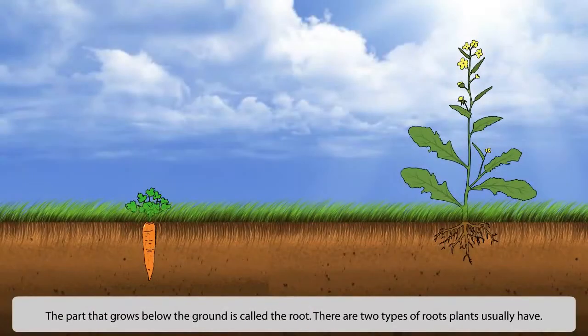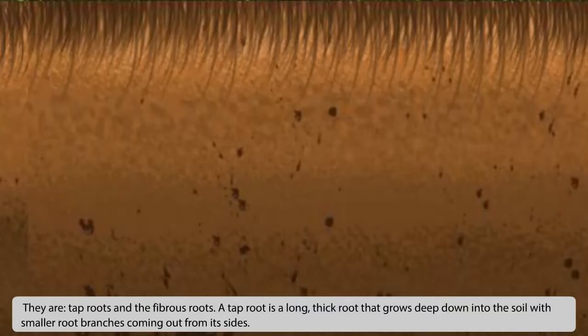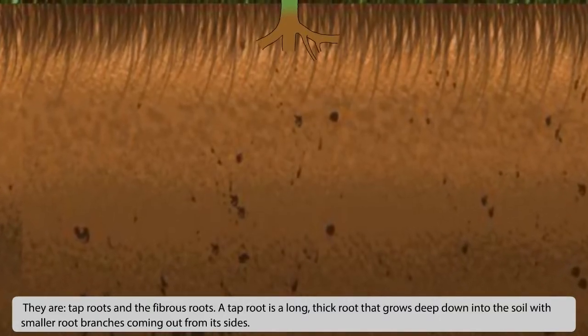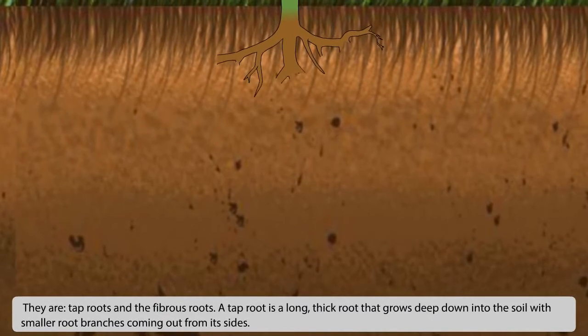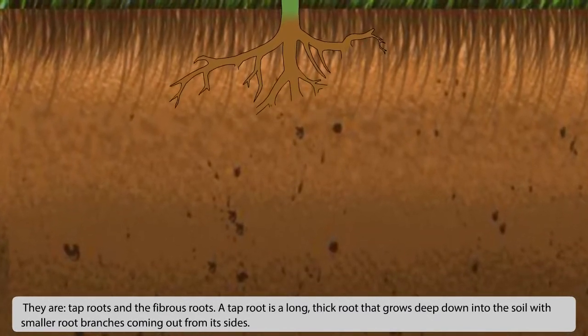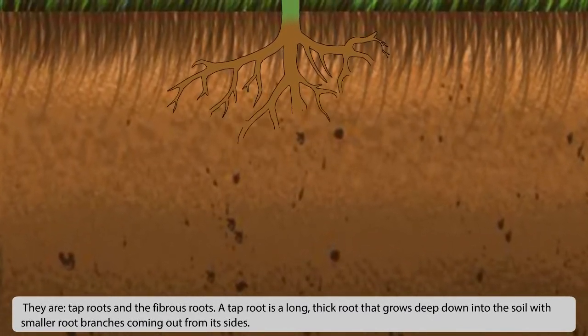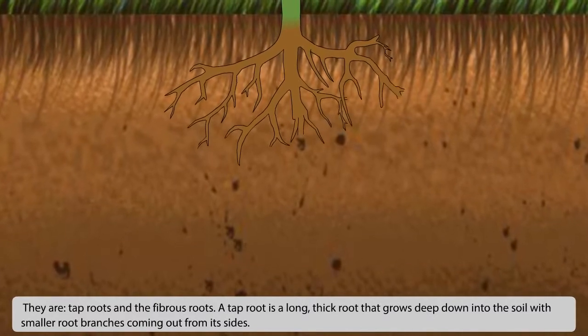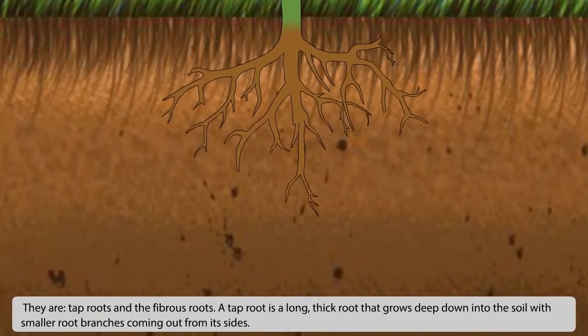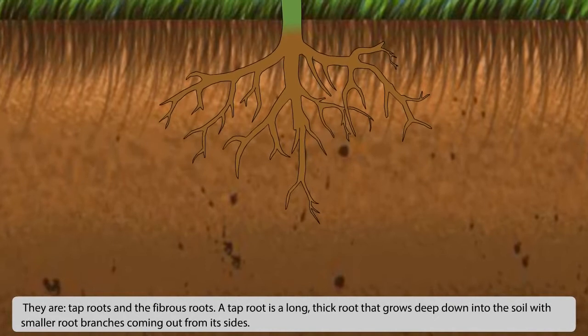The part that grows below the ground is called the root. There are two types of roots plants usually have. They are tap roots and fibrous roots. A tap root is a long, thick root that grows deep down into the soil.